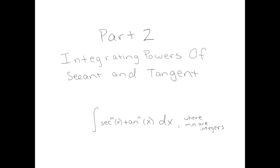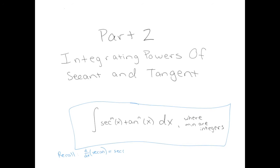In the second part of this video, we're integrating powers of secant and tangent. Recall the derivative of sine is cosine and vice versa — a single power of sine or cosine differentiates to a single power. For secants and tangents it's more involved: the derivative of a single secant equals secant times tangent, and the derivative of a single tangent becomes secant squared. Because of these different derivative relationships, the rules for secants and tangents will be different.